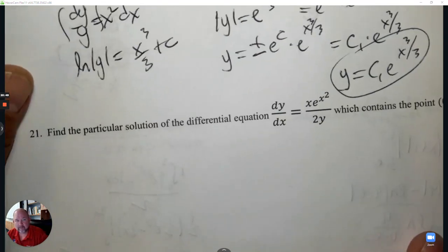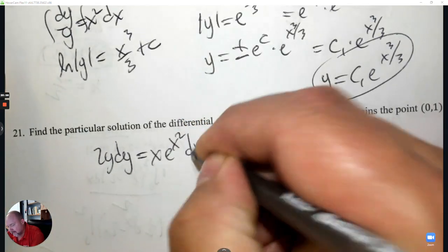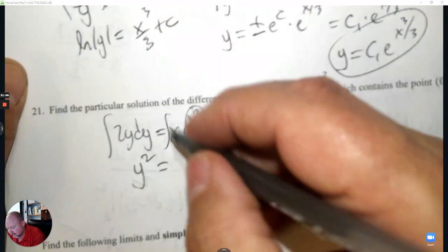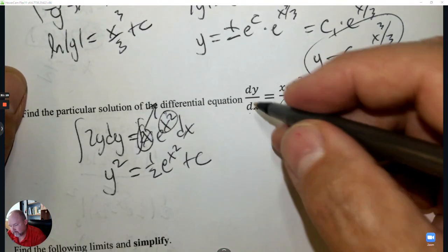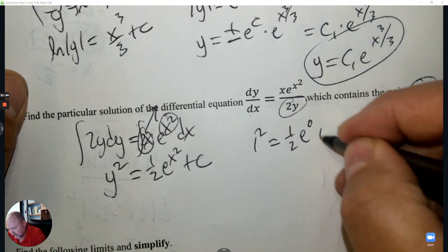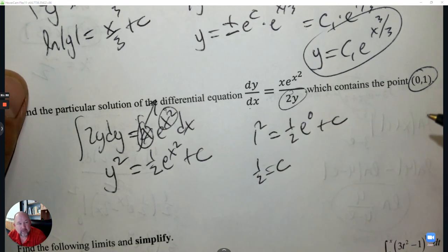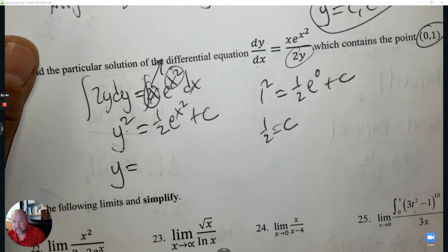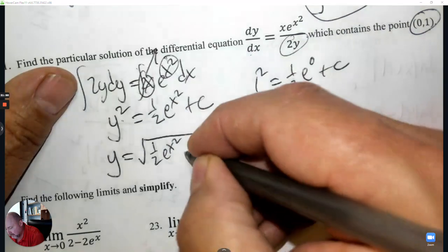This one has a point, so separate variables and plug in the point. Multiply by 2y and by dx, then integrate both sides — left side gives y², right side: hook is 2x, ratio is 1/2 times e^(x²), plus C. Plug in x = 0 and y = 1 to find C: e^0 = 1, so 1/2 · 1 − 0 = 1/2, meaning C = 1/2. Square root — y coordinate is positive, so take the positive root. Final answer: y = √(1/2 e^(x²) + 1/2).